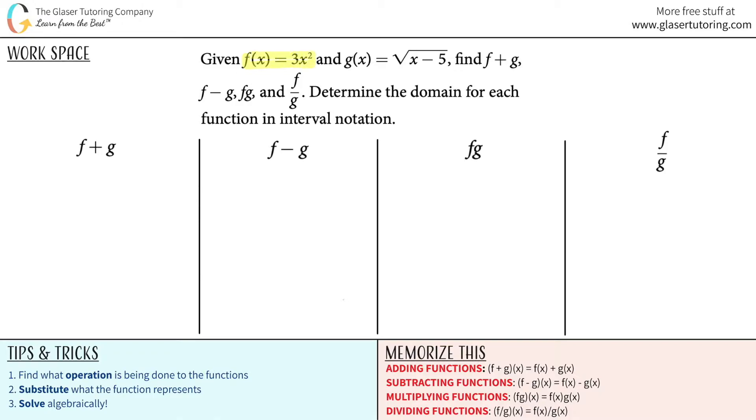Given f of x equals 3x squared and g of x equals rad x minus 5, find f plus g, f minus g, f times g, and f divided by g, and then for each we're going to find the domain for each function in interval notation.